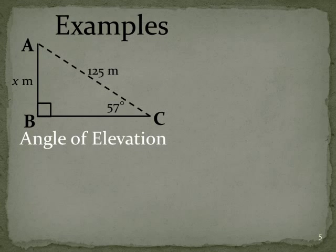Let's take a look at a couple of examples. Here we have an angle of elevation. Typically you might have, for this one, we know the distance from A to C, so you might have something like a kite on a string. The angle of elevation of the kite is 57 degrees, and we want to find out how far above the ground it is.